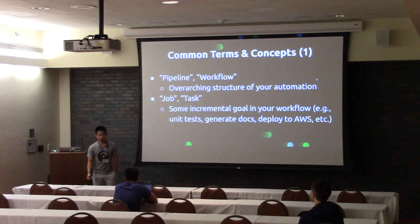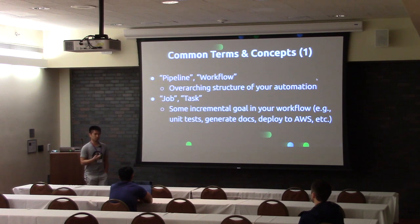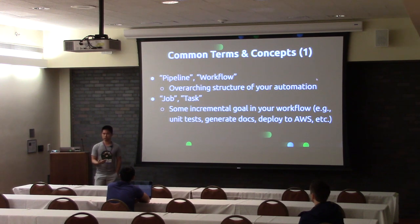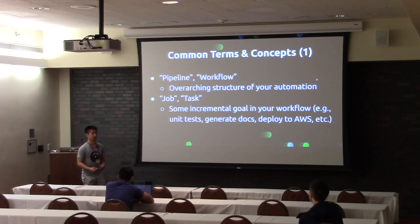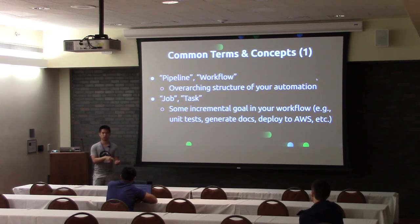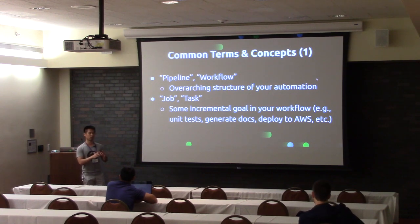Some common terms and concepts you will find in all CICD tools: first is a pipeline or workflow. CircleCI uses both terms, and you'll hear them in many other places — Jenkins uses 'pipelines,' CircleCI calls it a 'workflow.' Whatever it is, it's a term indicating the overarching architecture of your CICD process. Inside your pipeline or workflow, you're going to have individual jobs or tasks for doing one specific thing — such as run unit tests, run integration tests, generate documents, or deploy to AWS or GCP.